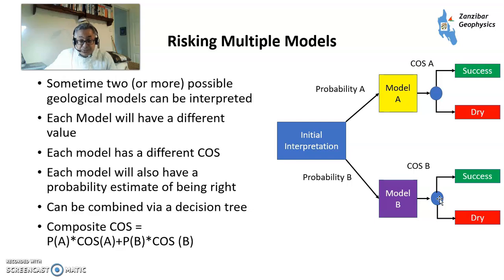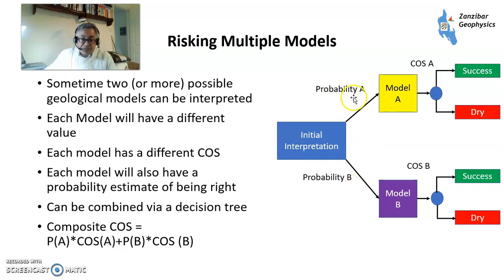These would be different for the two different models — the values would also be quite different — and these would have a different probability of occurrence. You can use your geological knowledge and geological evidence to assign probabilities. Probability A might be high and probability B might be low, but you can't discount it, so you'll include this in the analysis.